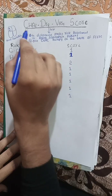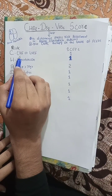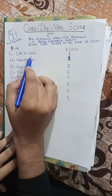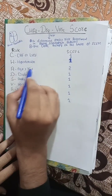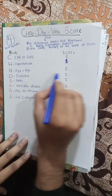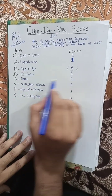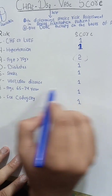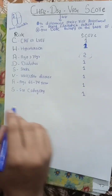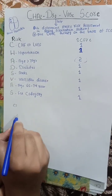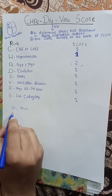So what does the short form stand for and how do we determine the score? C means congestive heart failure and left ventricular ejection fraction — score is 1. H means hypertension — score is 1. A2 means age greater than 75 years — score is 2. D means diabetes — score is 1. S2 means stroke — score is 2. V means vascular disease — score is 1. A means age 65 to 74 — score is 1. Sc means sex category — score is 1. If the total score is 0, that means 0 in men and 1 in females.